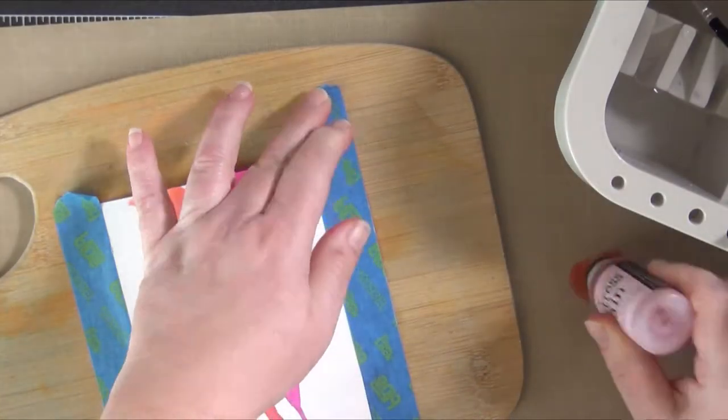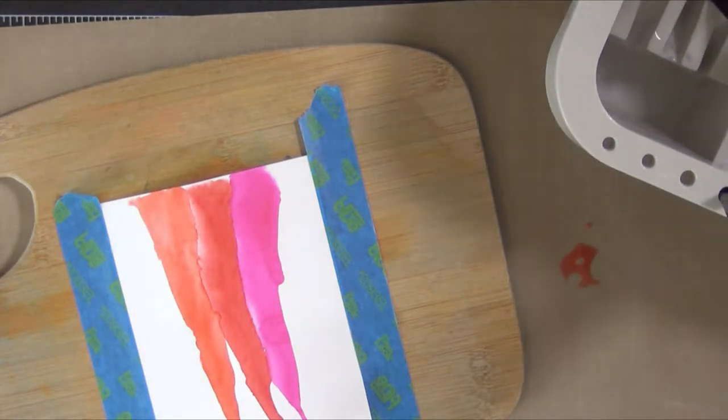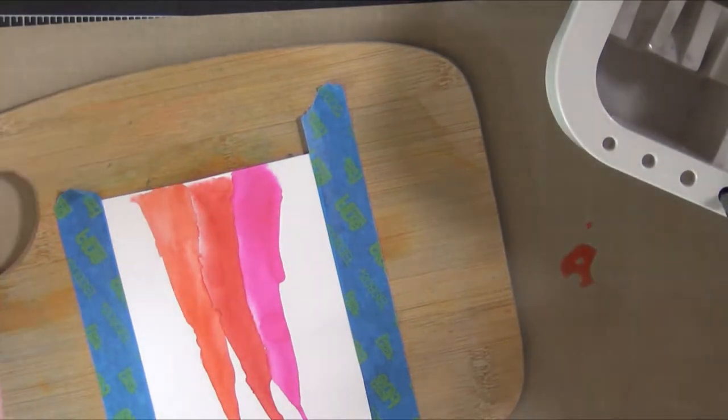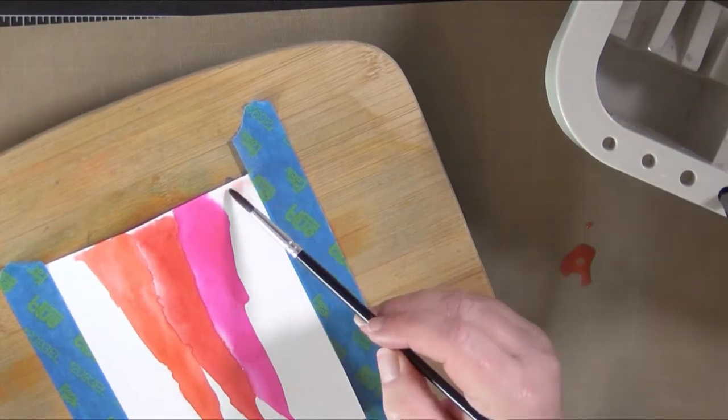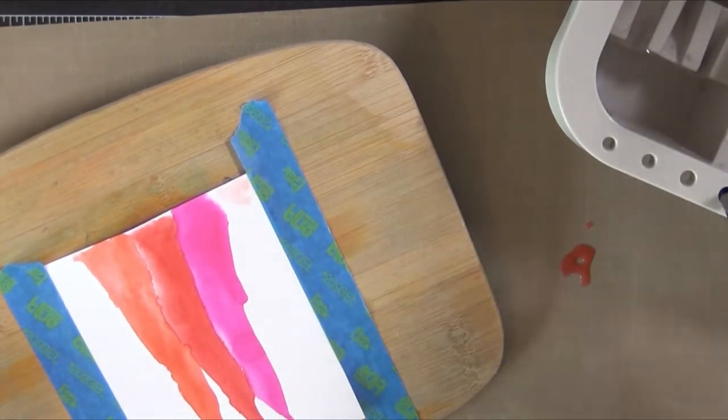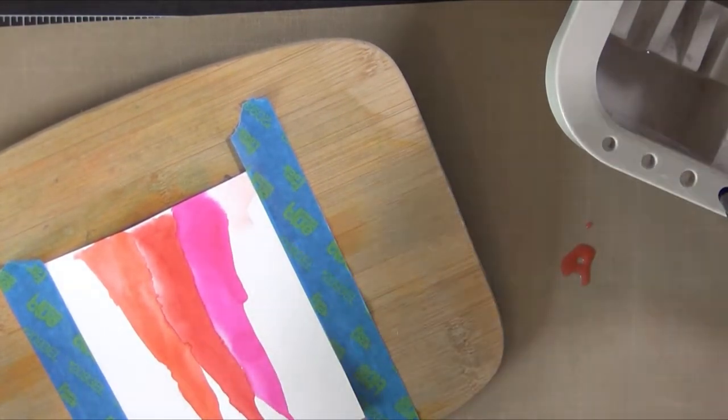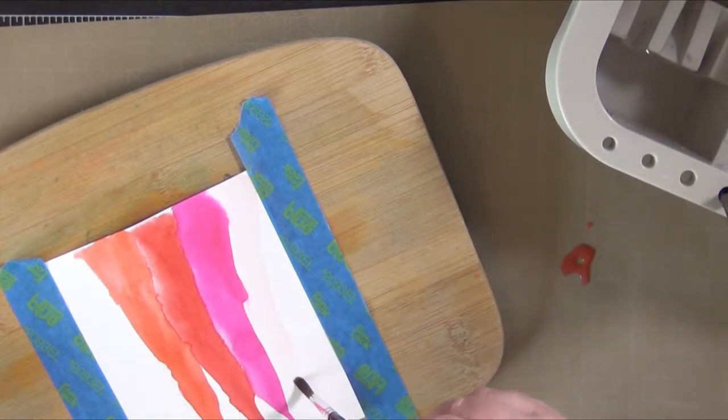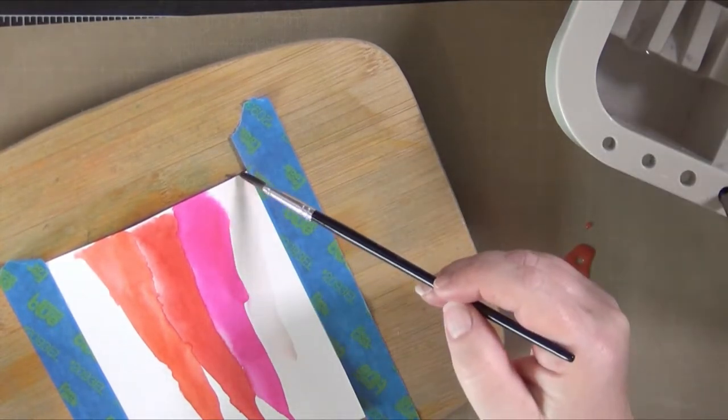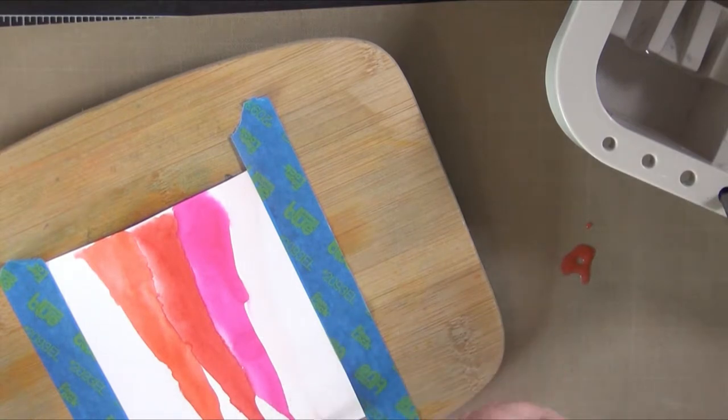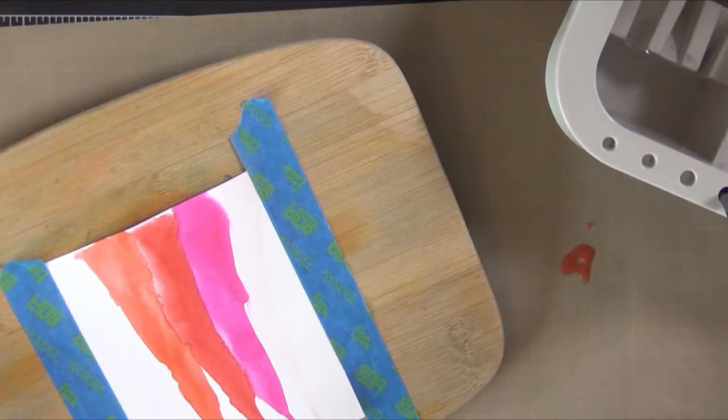Now the next distress stain color I'm coming in with is Spun Sugar. I'm going to follow the exact same process and I've sped up the video in the last segment as well as this one. I think you're probably getting a really good idea now. I'm just making different lines on each side of the center line and using different colors.